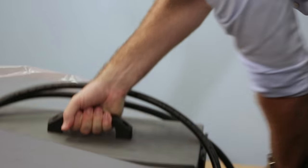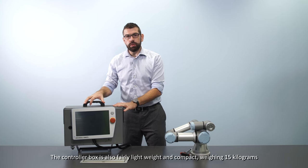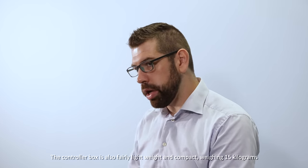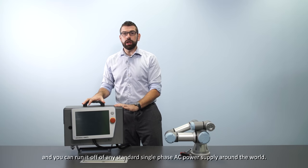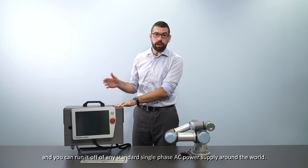The second box contains the Universal Robots controller. So the control box is also fairly lightweight and compact, weighing 15 kilograms, and you can run it off of any standard single-phase AC power supply around the world.